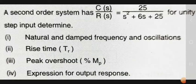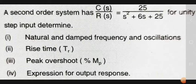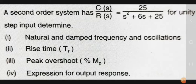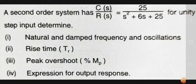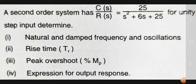Determine: first, natural and damped frequency and oscillations; second, rise time Tr; third, peak overshoot percent Mp; fourth, expression for output response. These are the four which you have to find out and determine for the second order system.